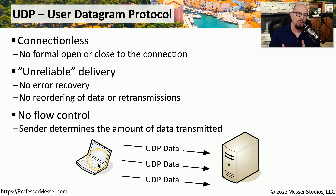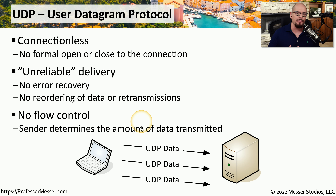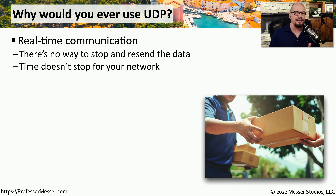With TCP we had a way to regulate the flow of communication across the network. But because UDP is a single conversation between one device and another, there's no flow control on UDP and no way to determine whether a device should slow down or send information faster. UDP may not sound as functional, but in reality UDP plays a very important role in being able to send information very quickly over the network.